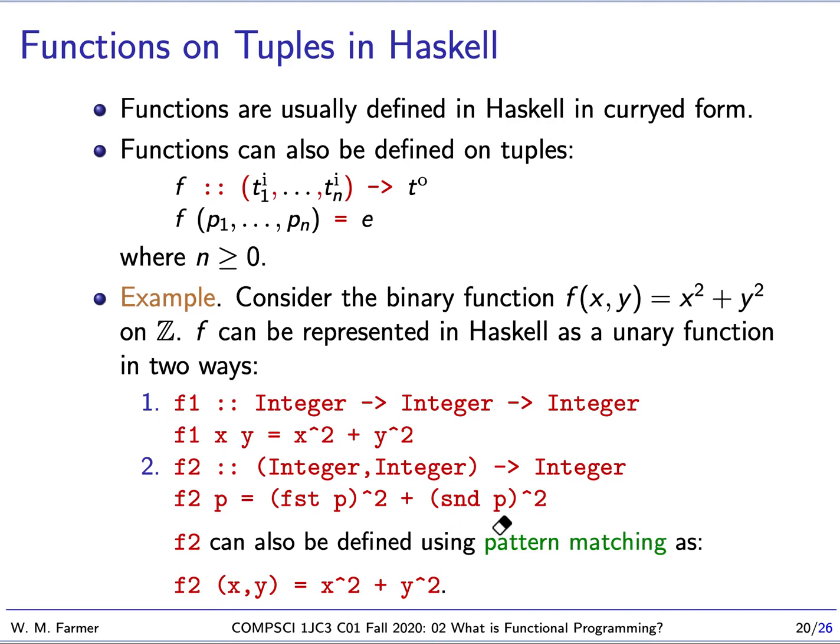We're going to see later that Haskell provides something very useful called pattern matching. Instead of using fst and snd, we can write the pair down as a pattern composed of x and y, like f2 (x,y) = x^2 + y^2. This definition using pattern matching is very close to the mathematical definition.